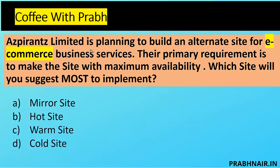First question: Aspirants Limited is planning to build an alternate site for their e-commerce business services. E-commerce means maximum availability is the primary concern, and their primary requirement is to make the site with maximum availability. So which site will you suggest most to implement? Option A: mirror site.